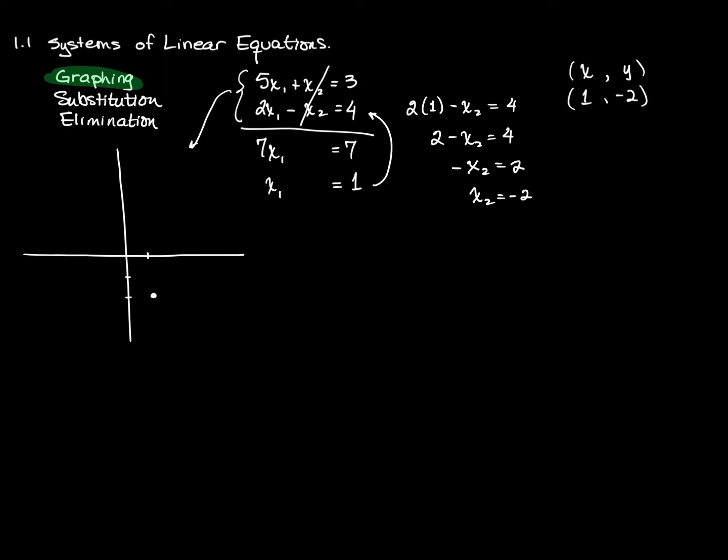But what does that mean? Well, the system of equations, I'm going to write this as 5x plus y equals 3, and 2x minus y equals 4, because as I go to graph these, it's more familiar, more comfortable to see equations of lines in that form.